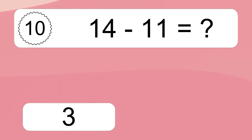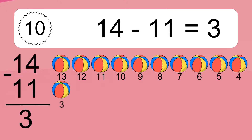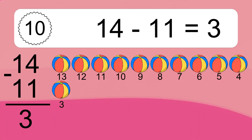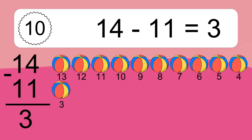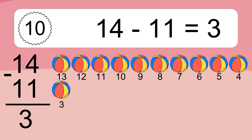14 minus 11 equals 3. Let's count it. 13, 12, 11, 10, 9, 8, 7, 6, 5, 4, 3.